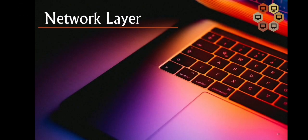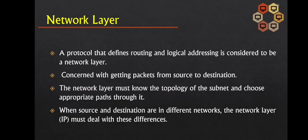We now go to network layer. The network layer is a protocol that defines routing and logical addressing, like IP addressing. It is concerned with getting packets from one location to another. The network layer must understand the subnet's topology, like bus topology or other network topologies such as hybrid topology and star, and select appropriate paths through it. When the source and destination networks are in different networks, the network layer or IP must accommodate these differences.